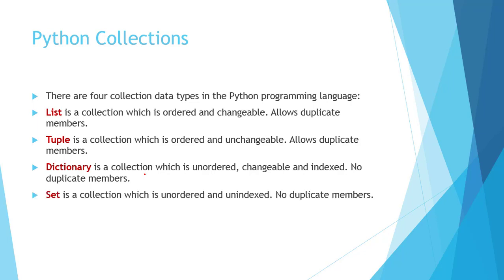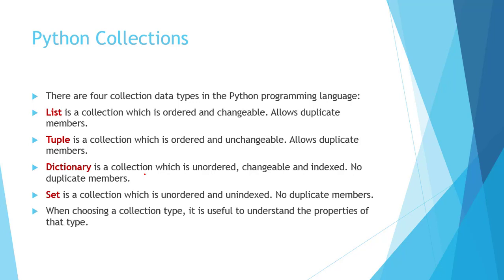Next is set. Set is also unordered and unindexed, and no duplicate members are allowed. So these are the main types of collection data types in Python programming, which are very useful. When choosing a collection data type, it is useful to understand the properties of that data type. In this video lecture, we will discuss the list collection data type; in further video lectures, we will discuss tuple, dictionary, and set.